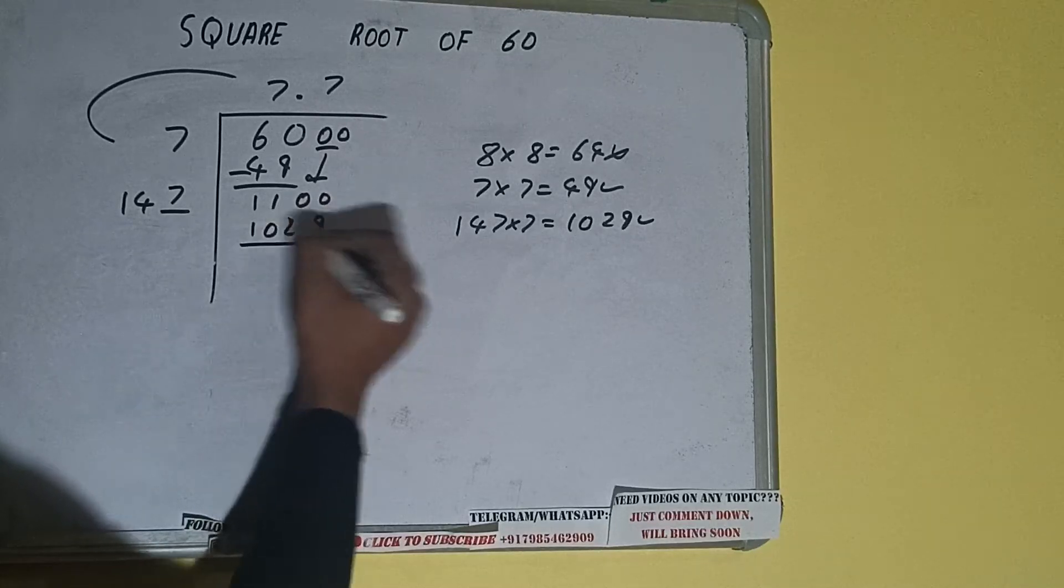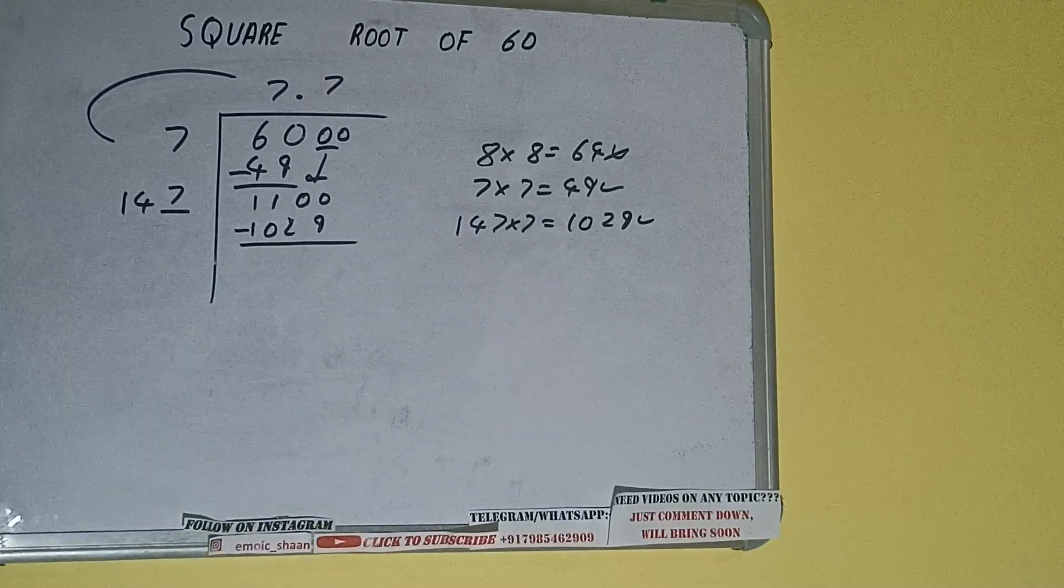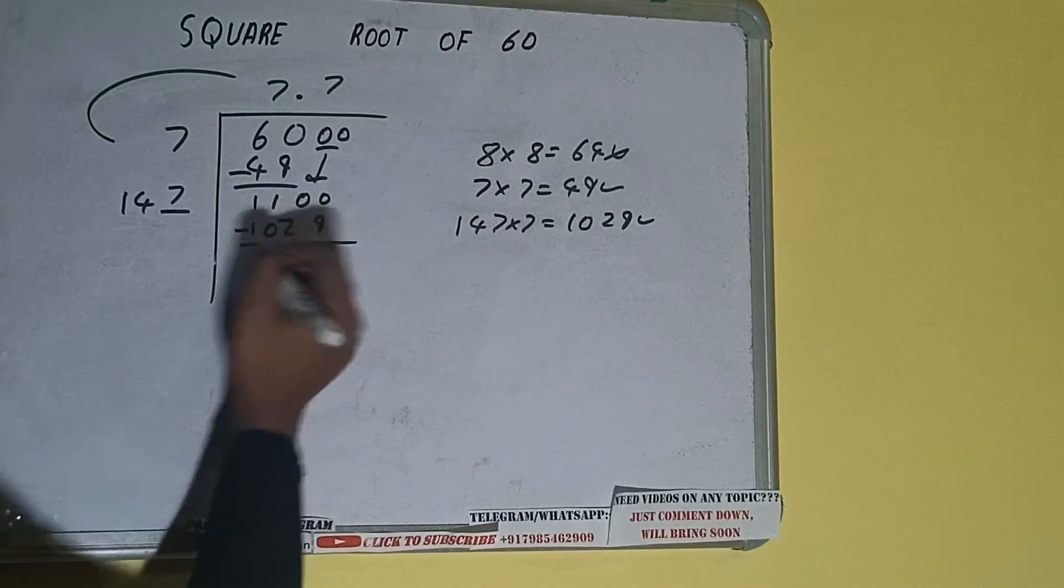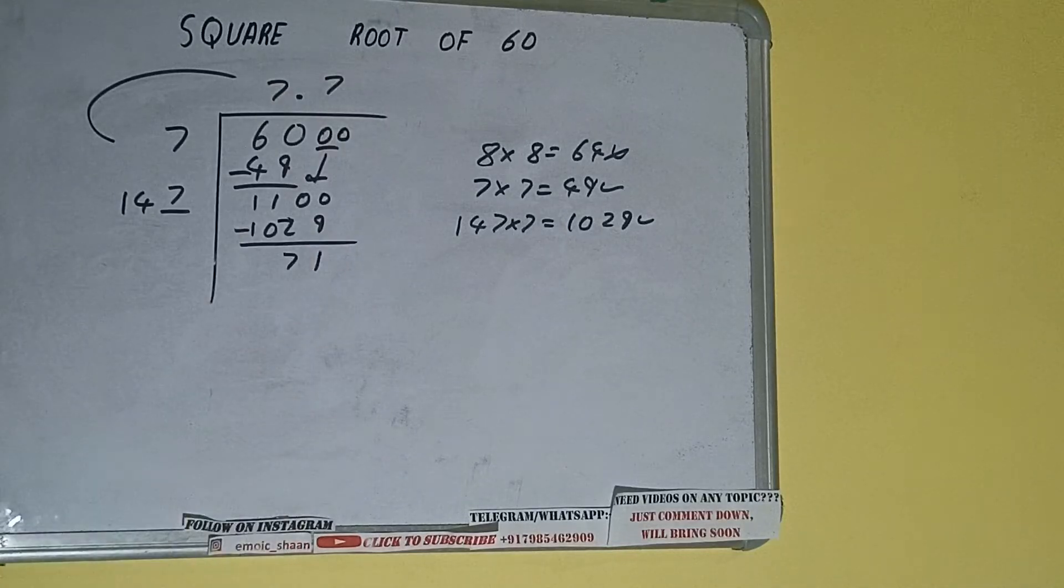So 7 here and 7 here, 1029, subtract, and 71 will be left.